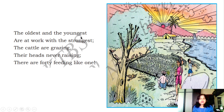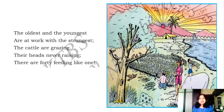The oldest and the youngest are at work with the strongest. The oldest is this man, the youngest is this man, and the strongest here refers to the sun — all of them are working. The cattle are grazing; see here, all the cattle are grazing, they are eating grass, their heads never rising. They are feeding — feeding like forty as one, meaning they are eating as much as forty cows, they are busy eating.